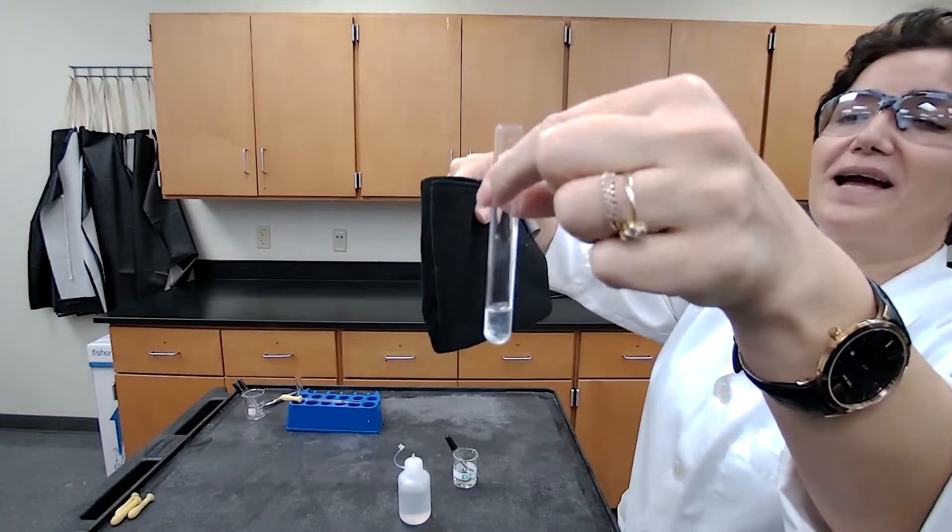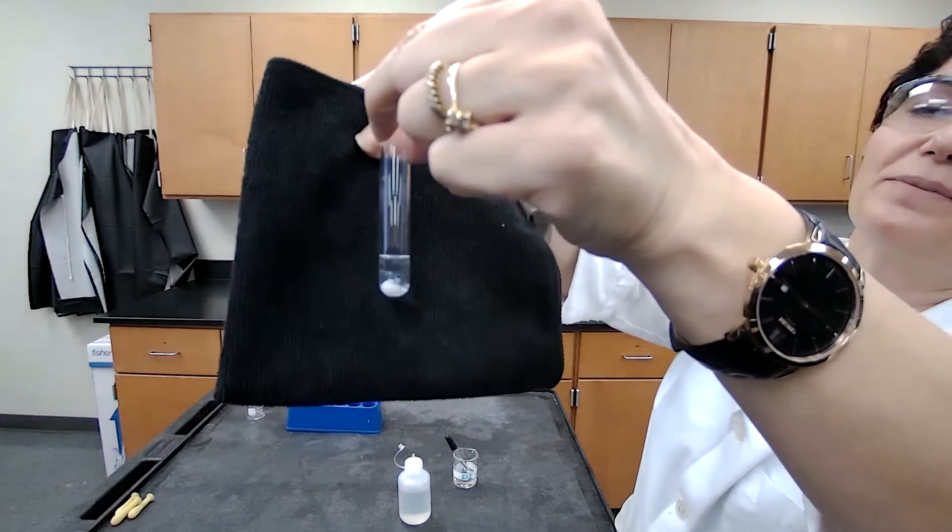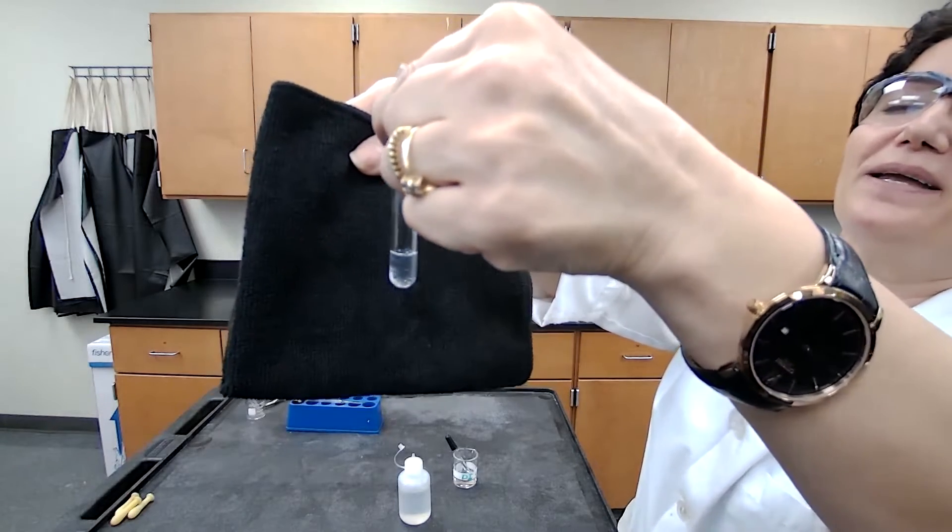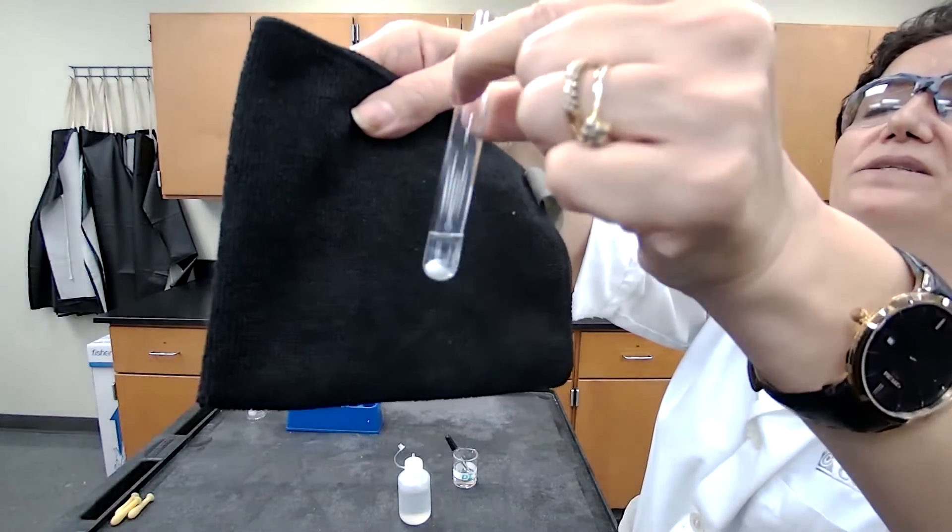After the centrifuge, we have now a clear solution and a precipitate at the bottom of the test tube. If I bring it close and rotate, you should be able to see the white precipitate and the clear solution.